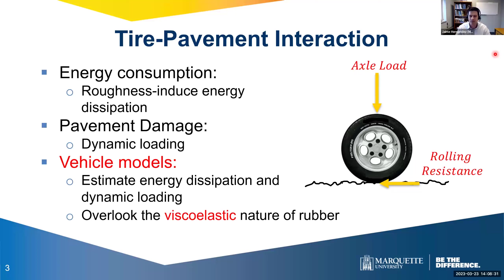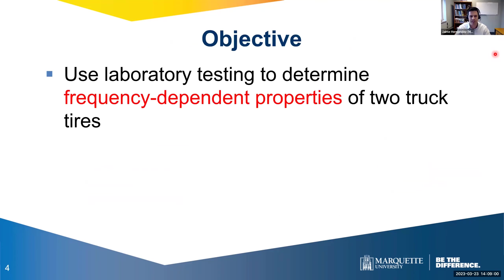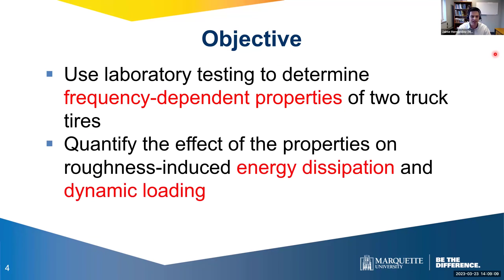We do know that the tire is mostly made out of rubber, and rubber is a viscoelastic material, meaning stiffness properties depend on both excitation frequency and temperature. This work focuses on the effect of loading frequency, with plans to extend it to include temperature effects using numerical models. The objective is to use laboratory testing to determine frequency-dependent properties of two truck tires, then incorporate those properties into a quarter car model to estimate energy dissipation and dynamic loading.